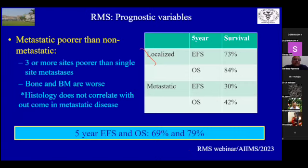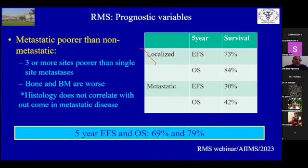Metastatic RMS has a really poor outcome, as shown by the very low event-free survival and overall survival. This is where we have failed over the last four to five decades in improving survival. The metastatic sites with more than three sites, bone marrow metastasis, fare worse than other sites such as pulmonary metastasis.